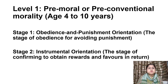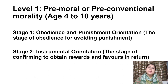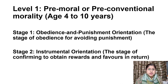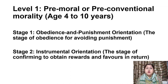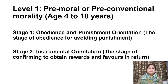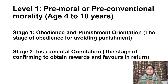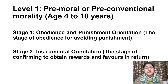The first level is also called pre-moral or pre-conventional morality. According to Kohlberg, the age group under this level is 4 to 10 years. There are two stages under this: Stage 1, which is obedience and punishment orientation, or the stage of obedience for avoiding punishment; and Stage 2, which is instrumental orientation, or the stage of conforming to obtain rewards and favors in return.